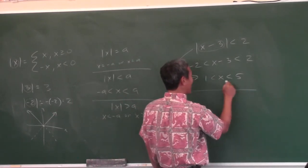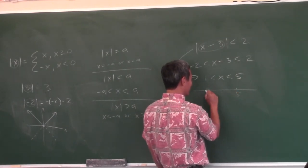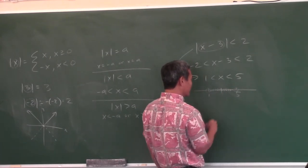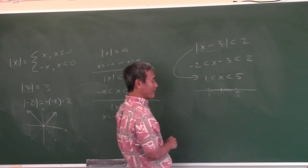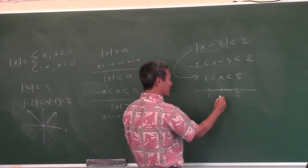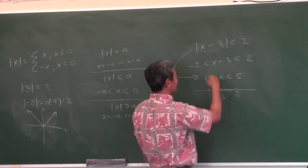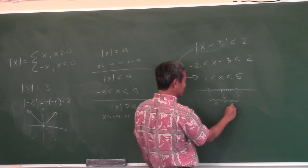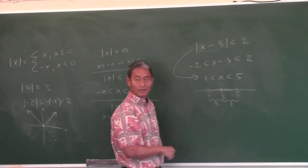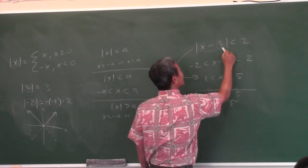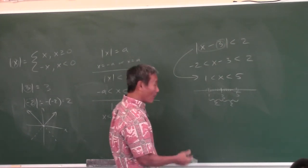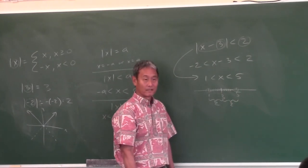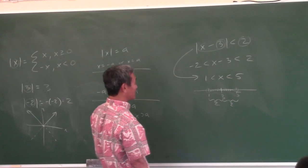Let's review: how do you graph x's between 1 and 5? What's the midpoint of this interval? Take the average: 3. And the distance from the center to the edge? Two. This number here is the midpoint, and this number tells you how much to go left and right. Every Algebra 2 book has that in it.